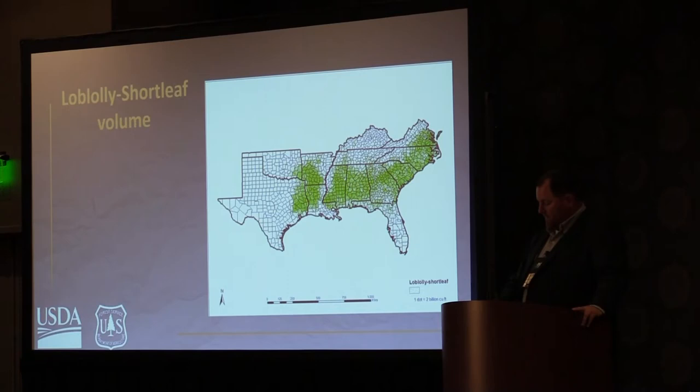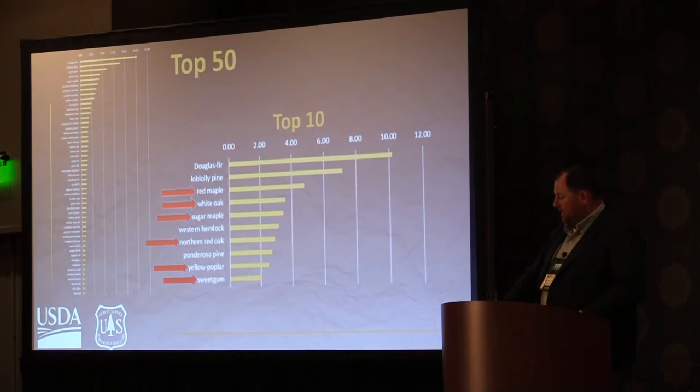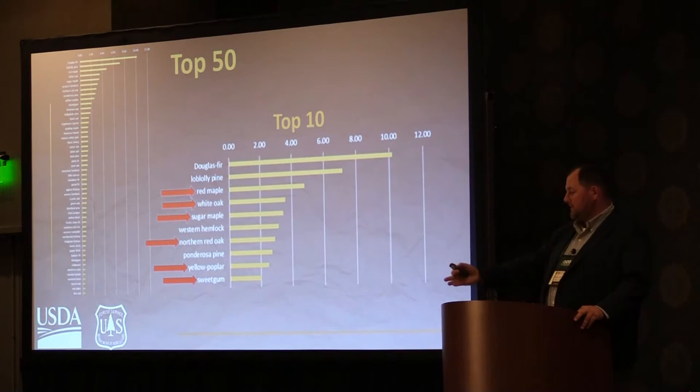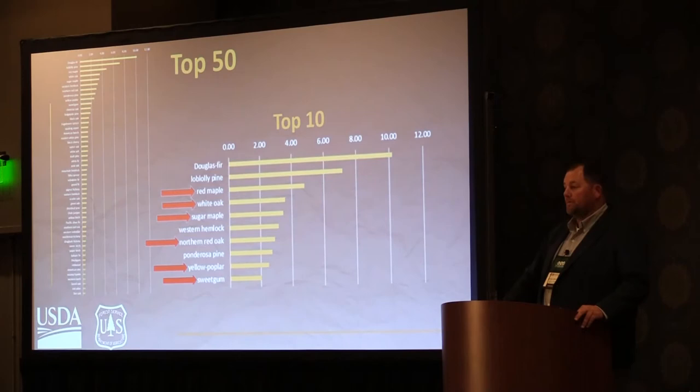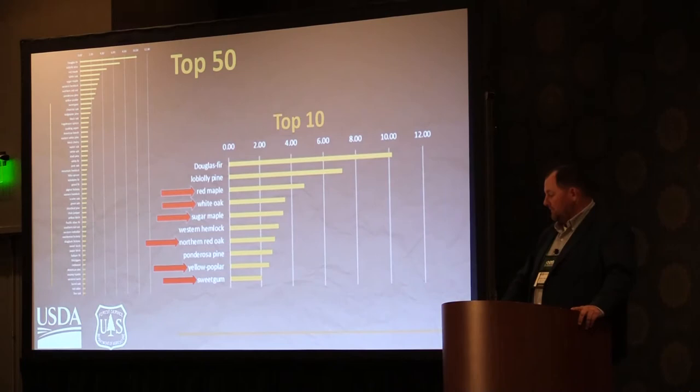Looking at the top 50 and then top 10 species, of the top 10 species, about six — indicated by the red arrows — are hardwoods. Douglas-fir is at the very top, and loblolly is the most important softwood.